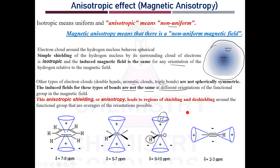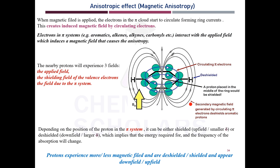This is called anisotropy, which leads to regions of shielding and deshielding. As the proton gets shielded or deshielded, you get different positions for these protons in the spectrum. So what exactly is the anisotropic effect? Let's take the example of benzene.